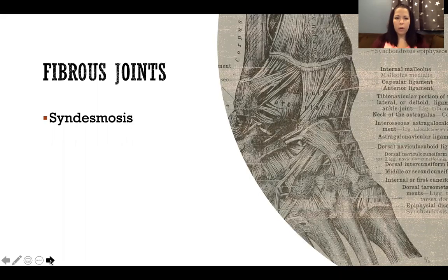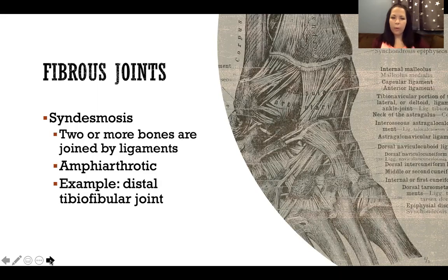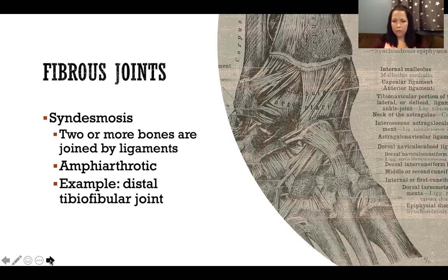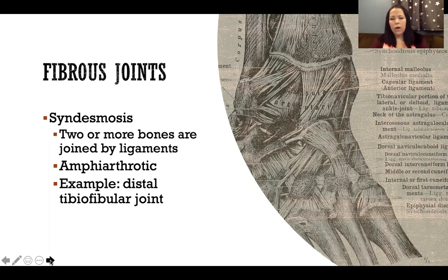Our second type is a syndesmosis or syndesmotic joint. That's where we have two or more bones joined by ligaments — bundles of collagen all going in the same direction. These are amphiarthrotic, so they allow a slight amount of movement. A good example is our distal tibial fibular joint, where the tibia and fibula articulate all the way down at the ankle. You may have heard of a high ankle sprain — this is the joint that is sprained when someone has a high ankle sprain.